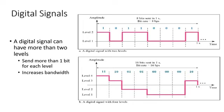However, a digital signal can actually have more than two levels. In this case, we can send more than one bit for each level, as shown in figure B. Level 1 sends bits 0-0, level 2 sends bits 0-1, level 3 sends bits 1-0, and level 4 sends bits 1-1. By this, we can double the bandwidth to carry more information, since the high and low levels are divided into multiple levels. Here, we are transmitting 16 bits in one second, making the bit rate 16 bits per second.